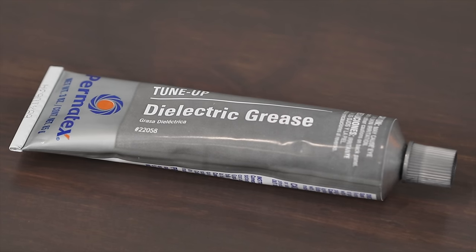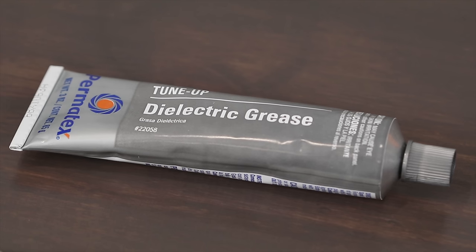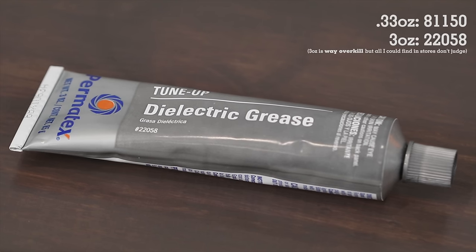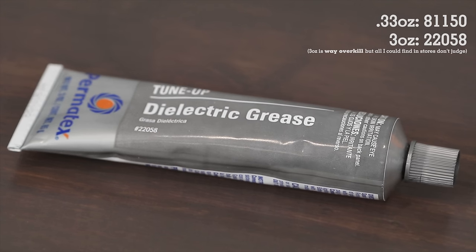The first thing you're going to need is some dielectric grease from Permatex. Item number is 81150 and you can find it at your local Menards or on Amazon.